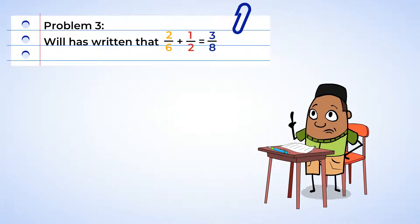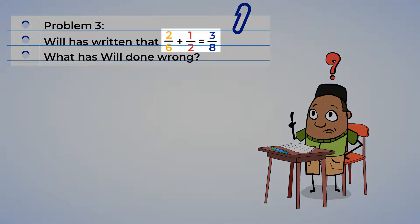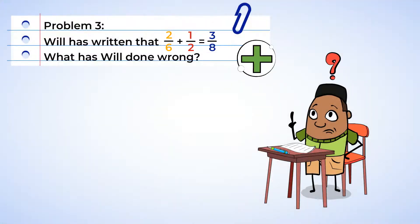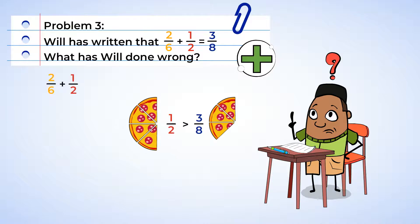And it looks like Will needs help with his homework. Now Will has written that two sixths plus one half is equal to three eighths. What has Will done wrong in his calculations? Here we have two sixths plus one half is equal to three eighths. And we know addition makes numbers go up in value. So if we're adding to one half, then the answer should be greater than one half. But here we have three eighths, which is less than one half.